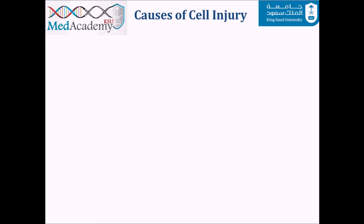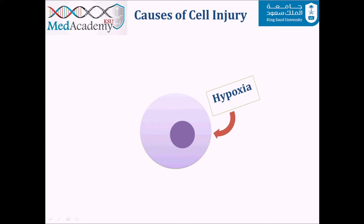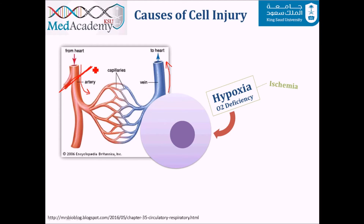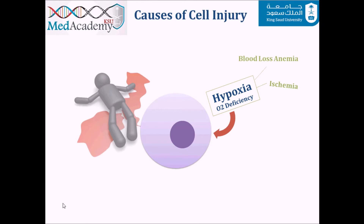There are many causes of cell injury; we will discuss eight of them. The first is hypoxia — oxygen deficiency. Ischemia is a very important cause. When an artery supplying a cell is blocked, the cell has less oxygen to produce energy and undergoes hypoxia. Similarly, if venous drainage is occluded, blood stagnation allows the cell to consume available oxygen briefly, after which hypoxia follows.